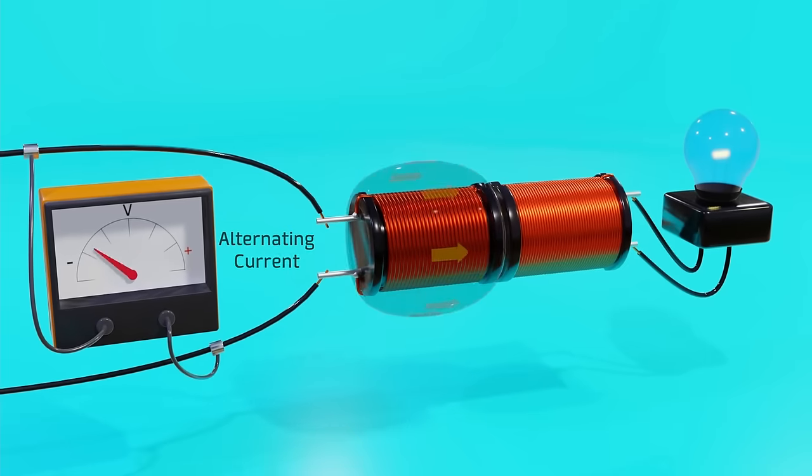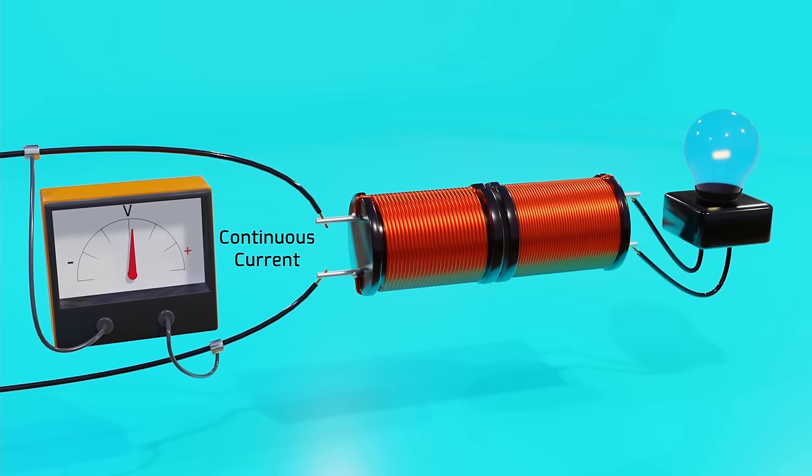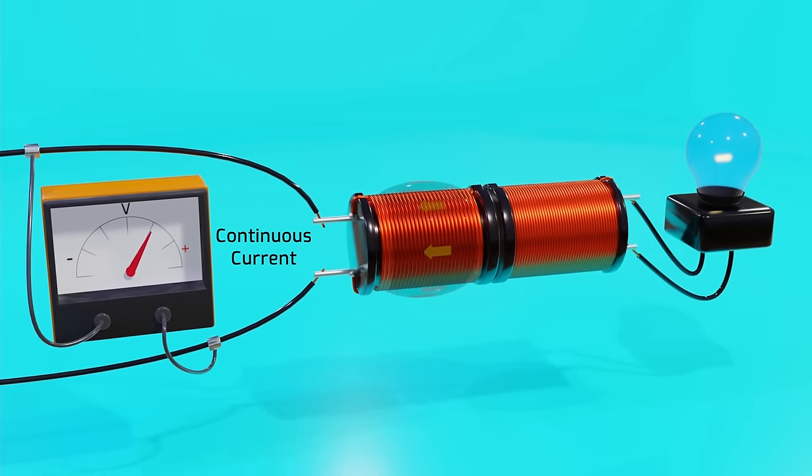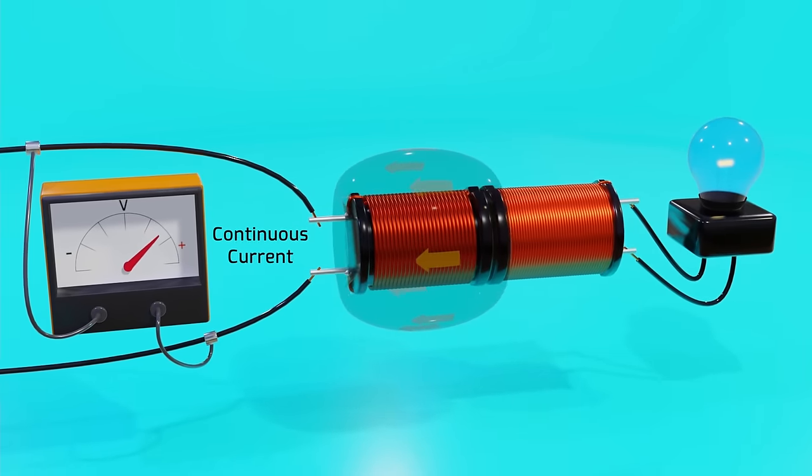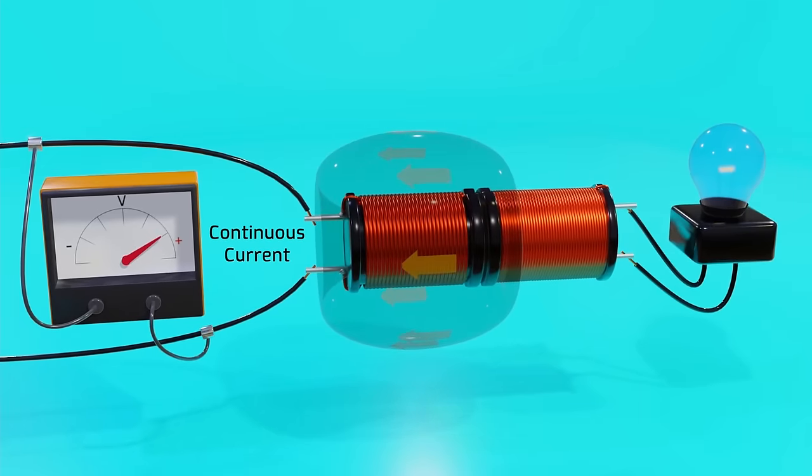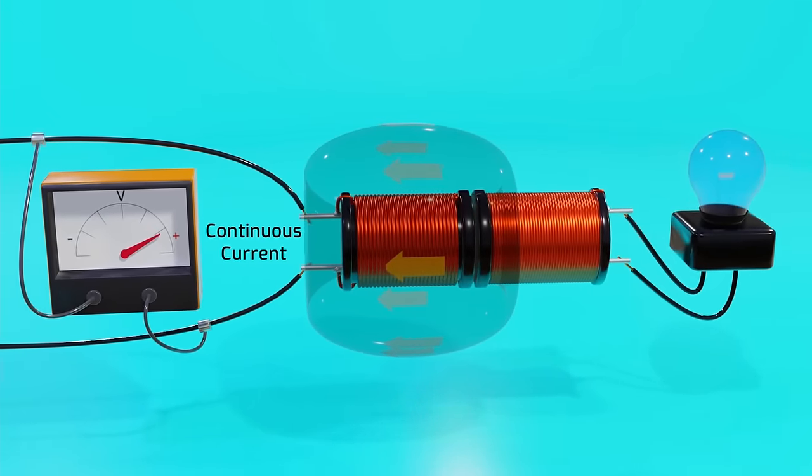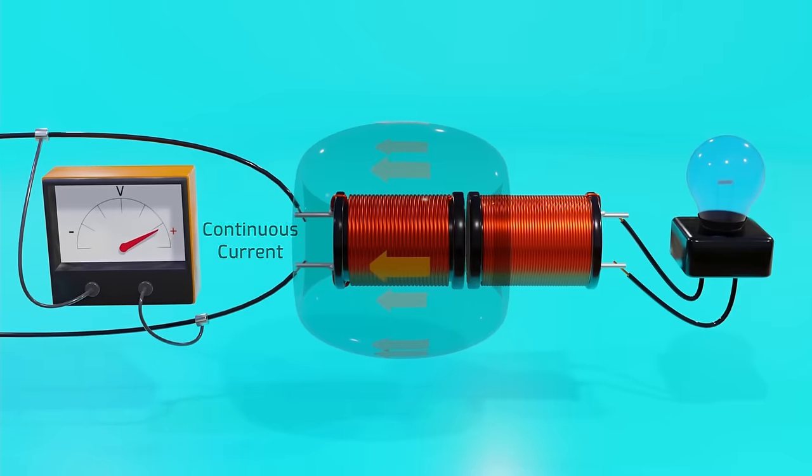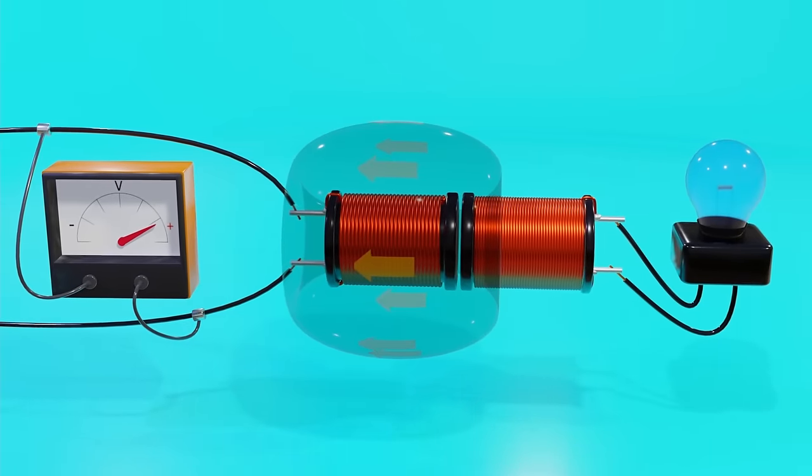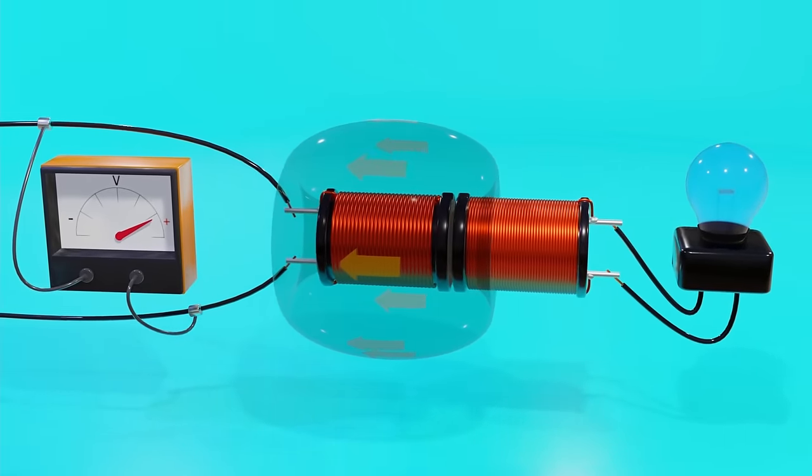So if we use direct current, the primary winding will generate a magnetic field that will eventually stop growing and be constant over time. As a consequence, the secondary winding is only going to induce a current at first, but once the magnetic field is constant it will simply stop inducing a current.